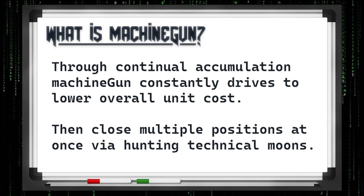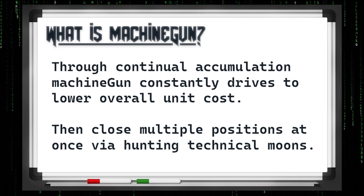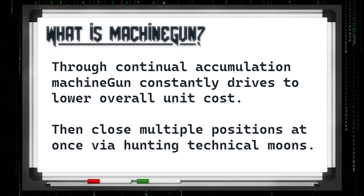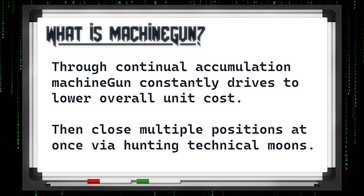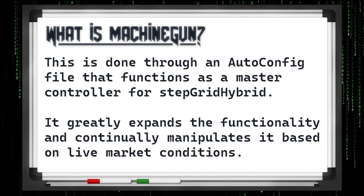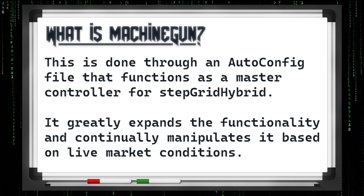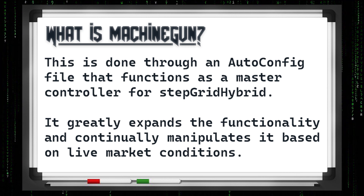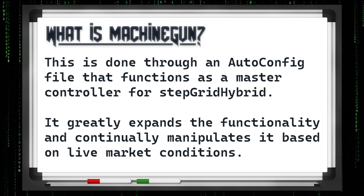We do this through continual accumulation, constantly trying to drive down overall unit cost, and then we close multiple positions at once via hunting technical moons. This is done through an auto-config file that functions as a master controller for StepGrid hybrid. It greatly expands its functionality and then continually manipulates it based on live market data.